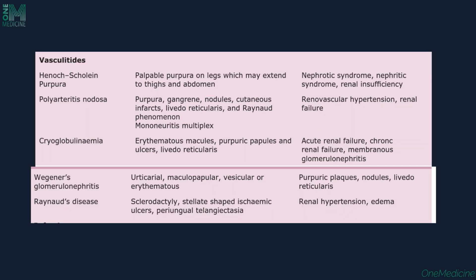We have certain vasculitides associated with renal manifestations: Henoch-Schönlein purpura, polyarteritis nodosa, cryoglobulinemia, IgA glomerulonephritis, and Raynaud's disease. In Henoch-Schönlein purpura, patients can have palpable purpura on the legs which may extend to the thighs and abdomen. Kidney manifestations include nephritic syndrome, nephrotic syndrome, and renal insufficiency. In polyarteritis nodosa, the patient can have purpura, gangrene, nodules, cutaneous infarcts, livedo reticularis, Raynaud's phenomenon, and mononeuritis multiplex, with associated renal hypertension and renal failure.